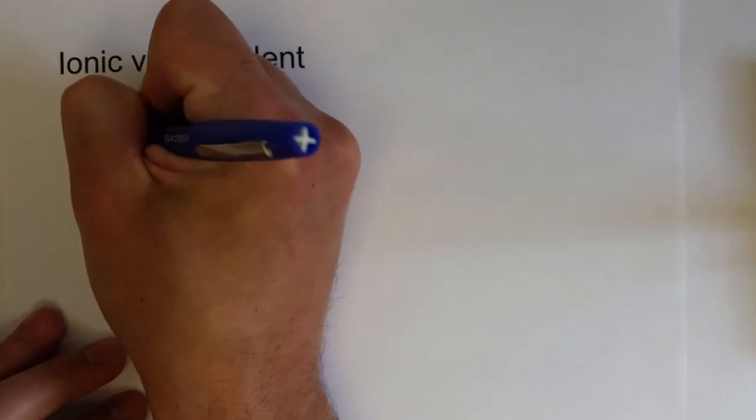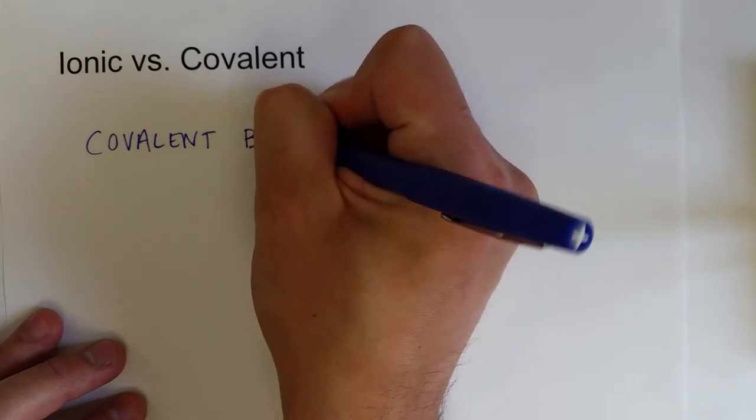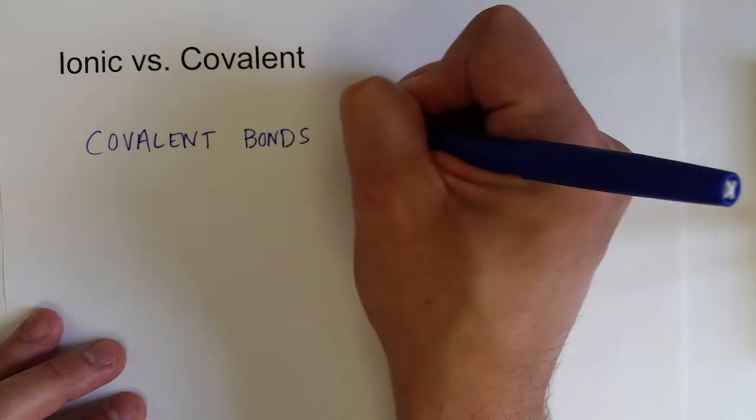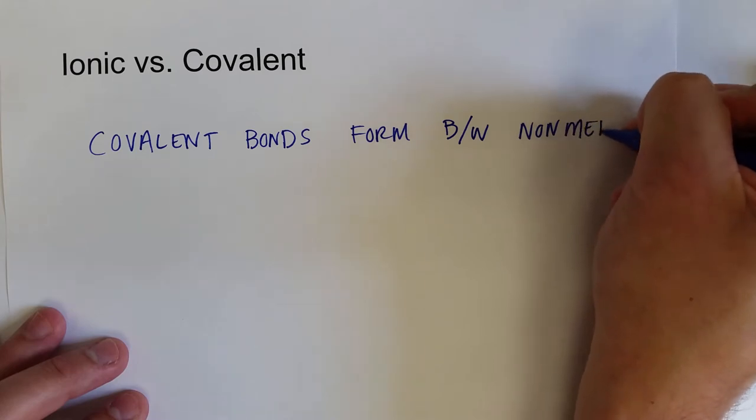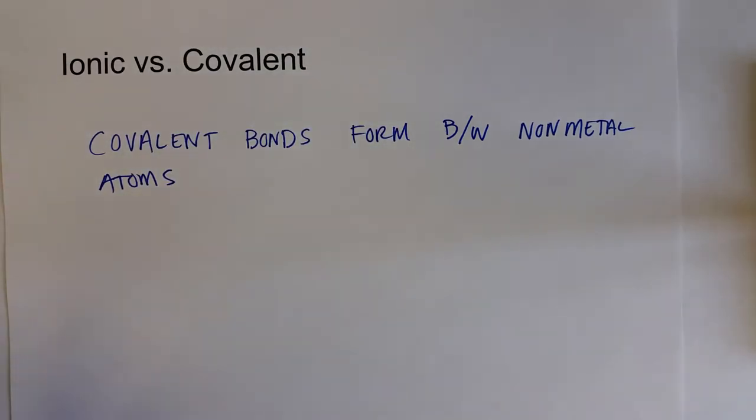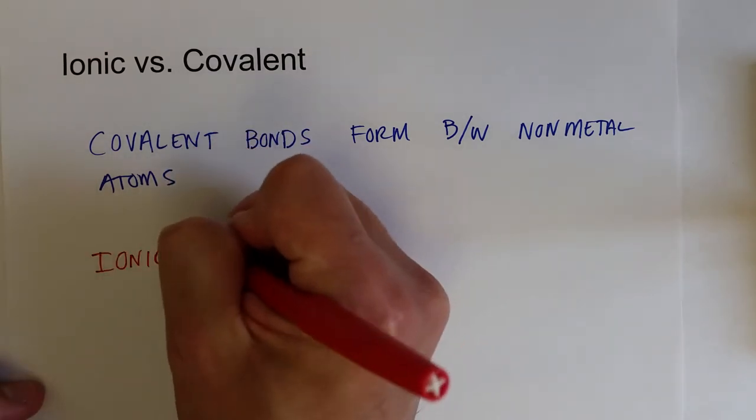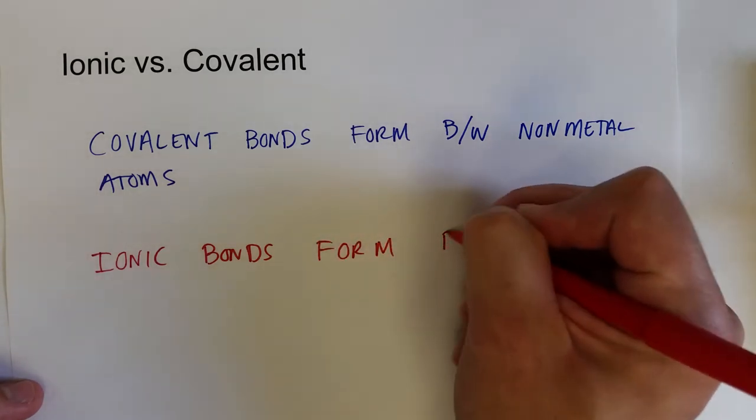So what are the two different scenarios in which an ionic bond or a covalent bond would set up? Well, it turns out that most of the time, not all the time, but most of the time, covalent bonds form between nonmetal atoms. And ionic bonds form between a metal and a nonmetal.